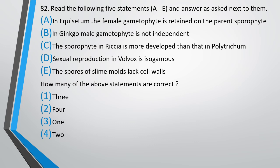Question number 82. Read the following five statements A to E and answer as asked. How many of the above statements are correct? Option 1: 3 are correct. Option 2: 4 are correct. Option 3: 1 is correct. Option 4: 2 are correct. The answer is option 3 — only one statement is correct.